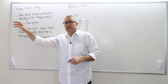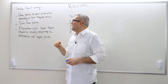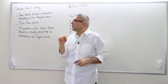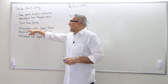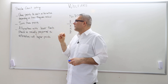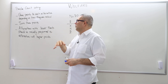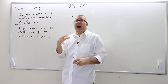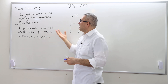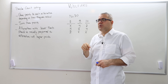Then sum the points each alternative receives across all the voters, and each alternative will have a total — we call them the Borda count. The alternatives with the lower points should be socially preferred to alternatives that have higher points. That's how it works.